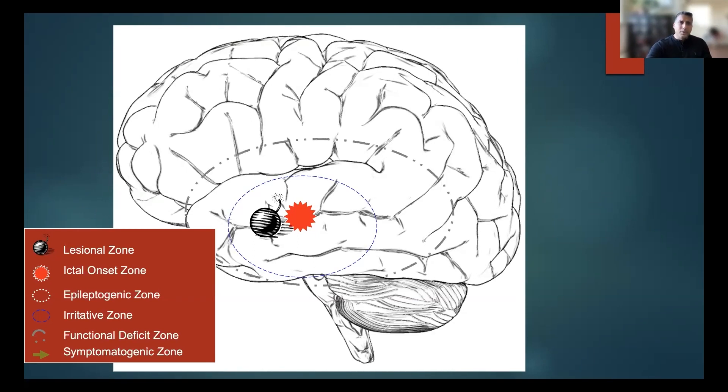What we also understand is that there's an epileptogenic zone as well as an irritative zone. Now the epileptogenic zone we'll talk about in a minute, but the irritative zone is very interesting because it's actually a much larger area than that ictal onset zone and the lesion, and we oftentimes can see that very well in a PET study.